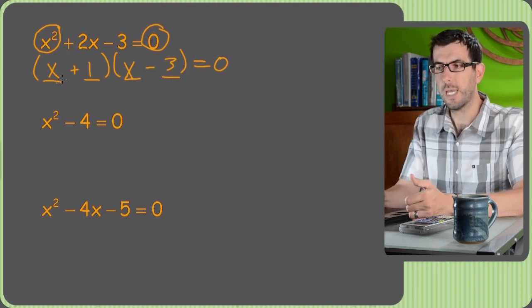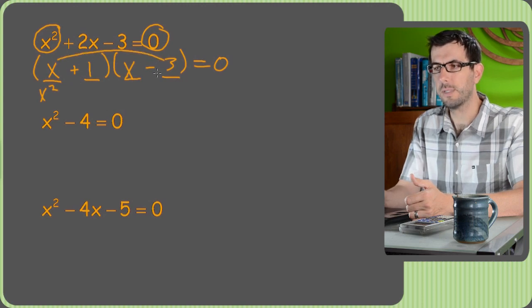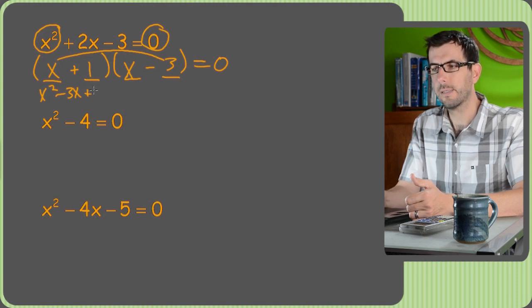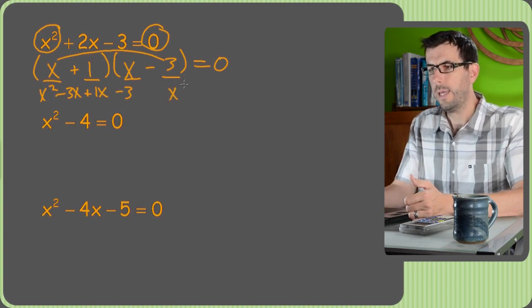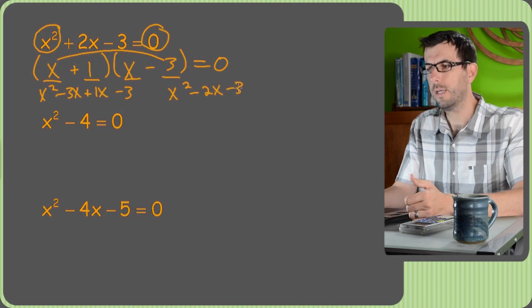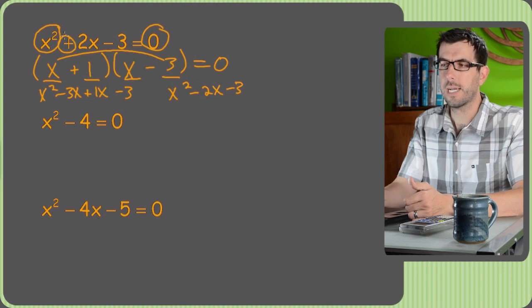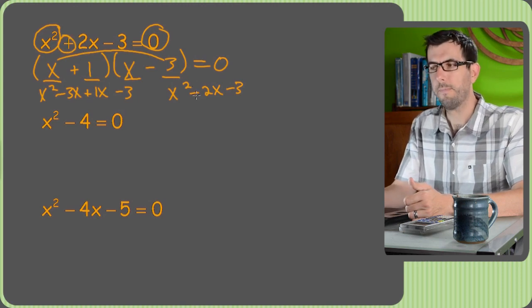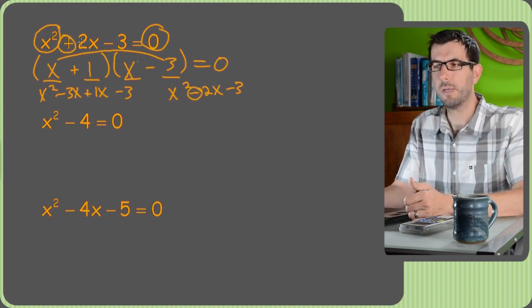So to foil we go x times x is x squared. Then our second term is this one, x times negative three is going to be negative three x. Then I need to add one x and subtract three. So this ends up being x squared, combine the two terms, minus two x, minus three. Is that correct we ask ourselves? Uh-oh, it's actually pretty close. The only problem was that I have a minus sign where there should be a plus sign.